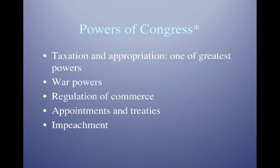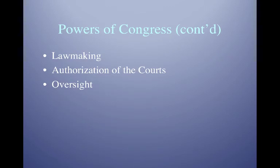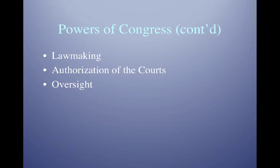Congress also has the power to override a presidential veto, whereas the president cannot override Congress if they refuse to act. Congress allocates funding for everyone's paycheck in the government. Congress has the power of lawmaking — the authority to make all laws necessary and proper for carrying into execution its powers, which has expanded over the years. Congress is also more powerful than the judicial branch because it can impeach judges and may establish or abolish courts below the Supreme Court level. Congress also has the power of oversight, keeping the executive, judiciary, and bureaucracy in check.